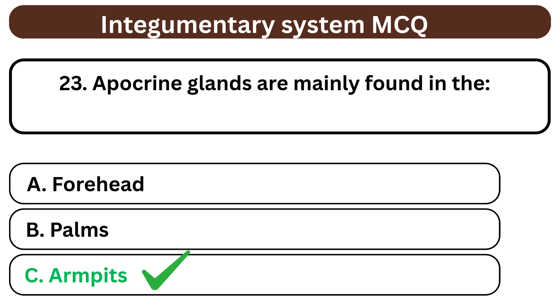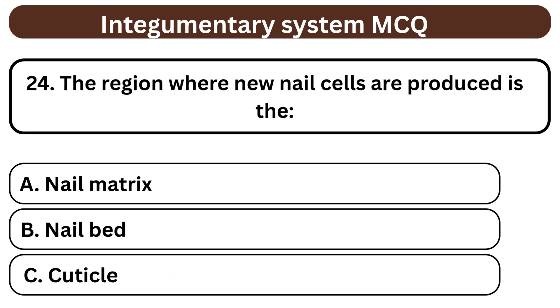Question 24. The region where new nail cells are produced is the A. Nail matrix. B. Nail bed. C. Cuticle. The answer is A. Nail matrix.